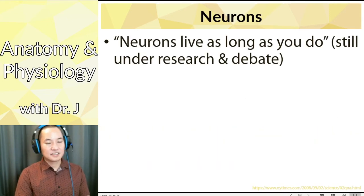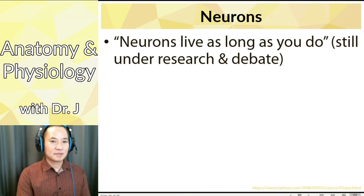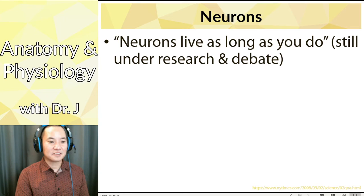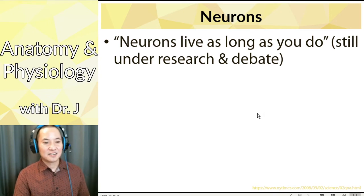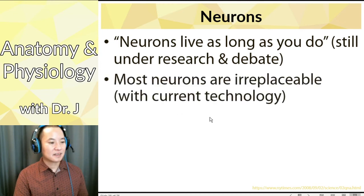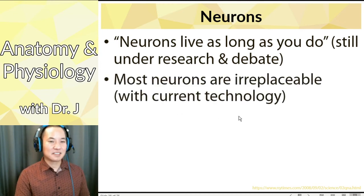So neurons, let's talk about them in general. I think a common saying is that neurons live as long as you do, and this is actually under research and debate. Why is it under research and debate? I think some sources say you're born with all the neurons you'll ever have, and any neurons you lose along the way, that's it. There's no way you can actually generate new neurons. That was kind of the old way of thinking. But now they're saying, is it possible that some neurons do regenerate? Or that if you lose the neurons, is that it? Or is there some way to replace them?